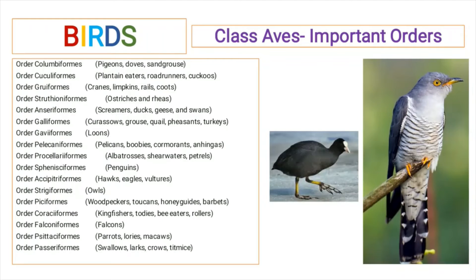In this video we will discuss the classification, key characteristics, and examples of important orders of class Aves. There are total 13 orders of birds, out of which 17 orders are considered important, and we will discuss the key characteristics and examples of these orders one by one.